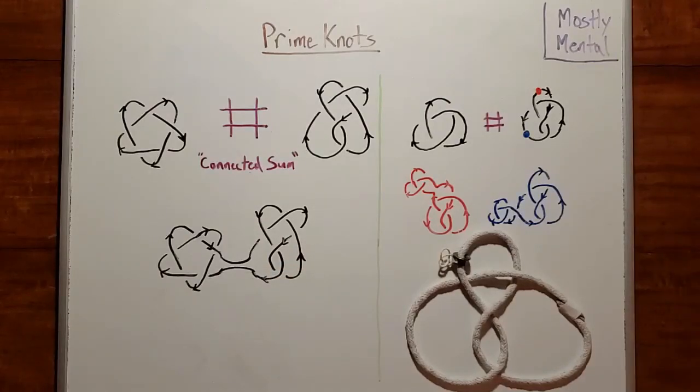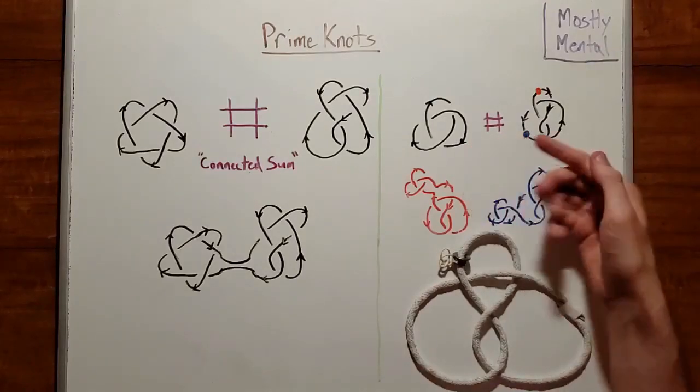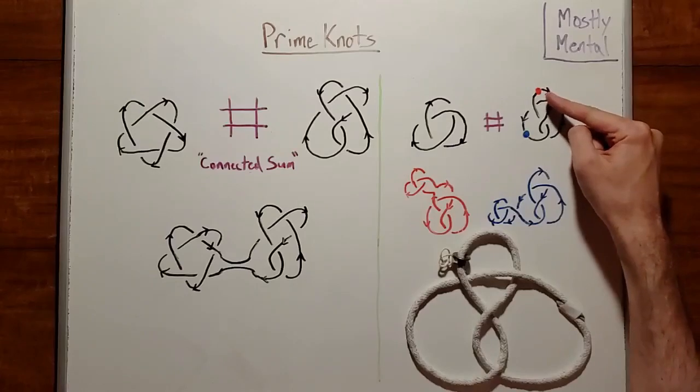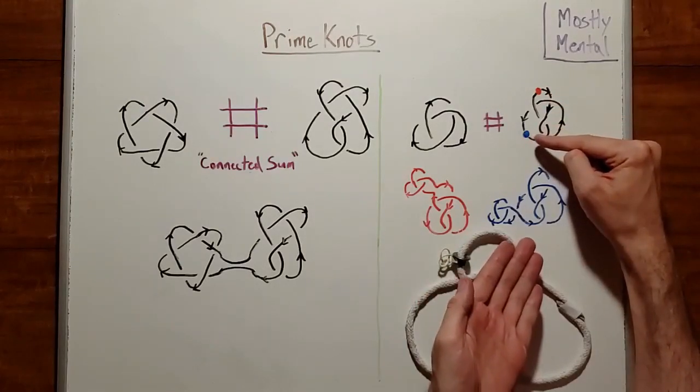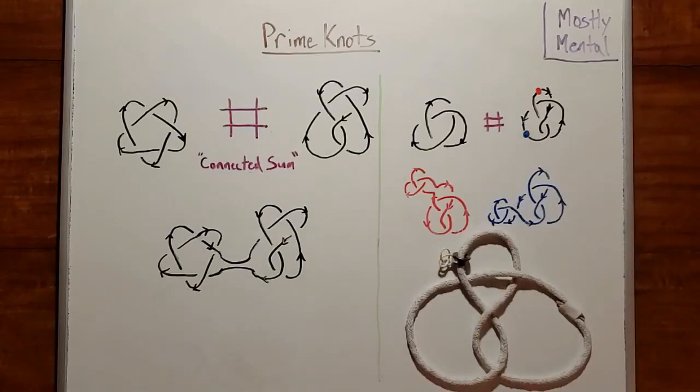That might seem a bit poorly defined. I mean, shouldn't it matter where we attach them? Like, if I stick this trefoil onto this figure eight at the red point, won't I get something different than if I stick it on at the blue point? Fortunately, it turns out no. We'll always get the same sum, regardless of where the two knots are joined.